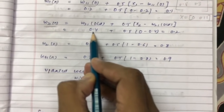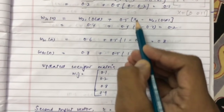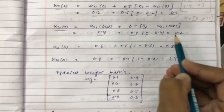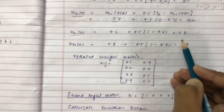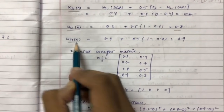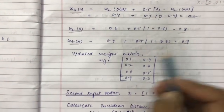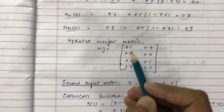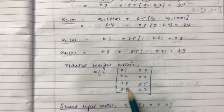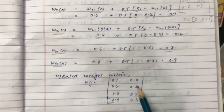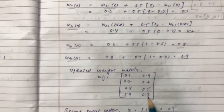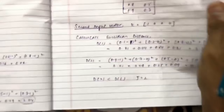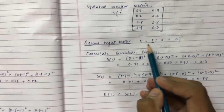Continuing the weight updates: w31(new) = 0.8 and w41(new) = 0.9. After presenting the first input vector, the updated weight matrix for cluster y1 becomes [0.1, 0.2, 0.8, 0.9], and the weights for cluster y2 remain unchanged as [0.9, 0.7, 0.5, 0.3].